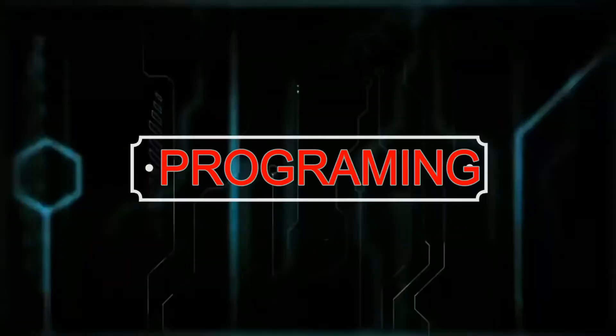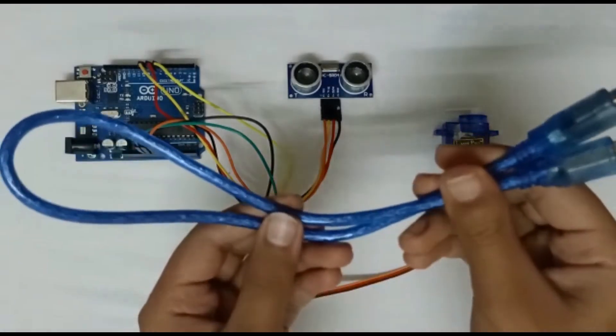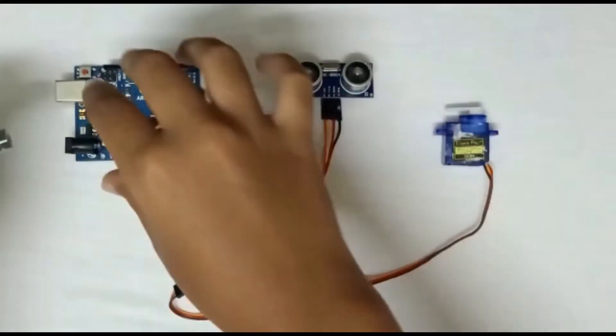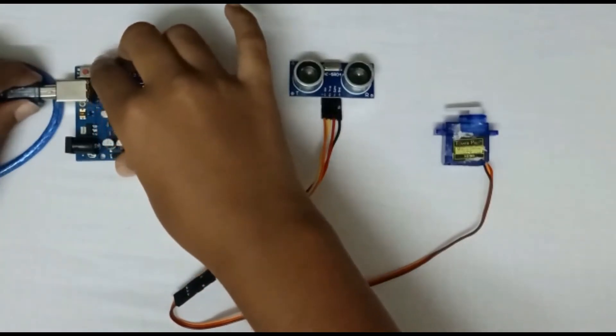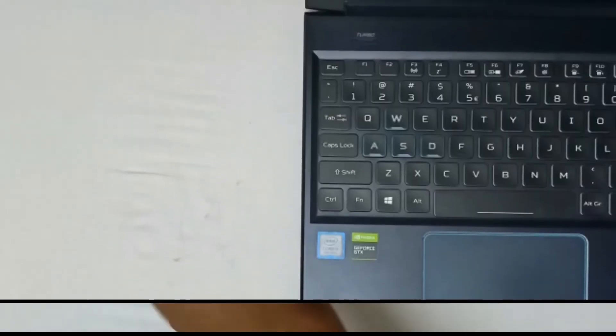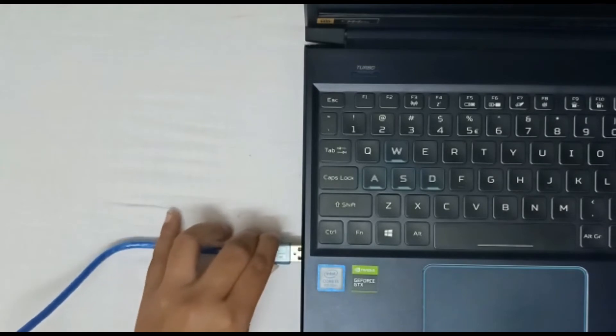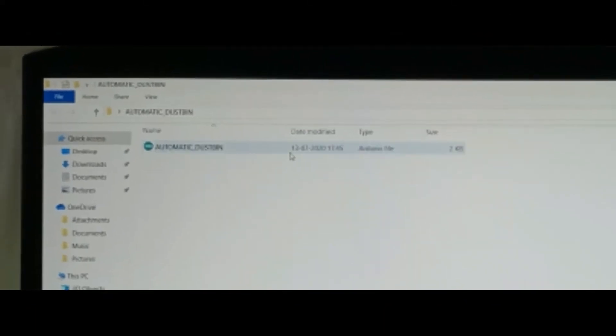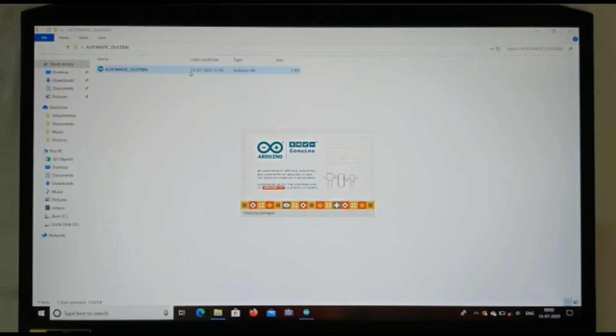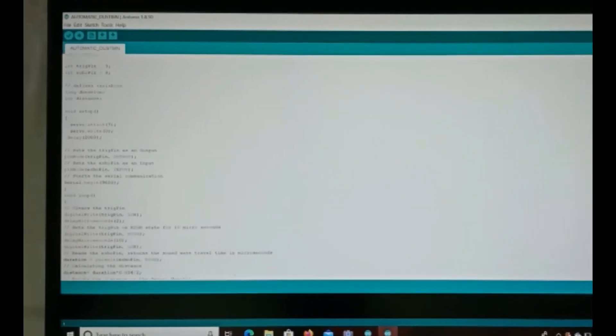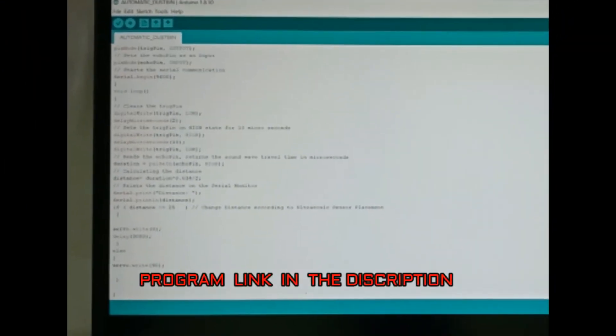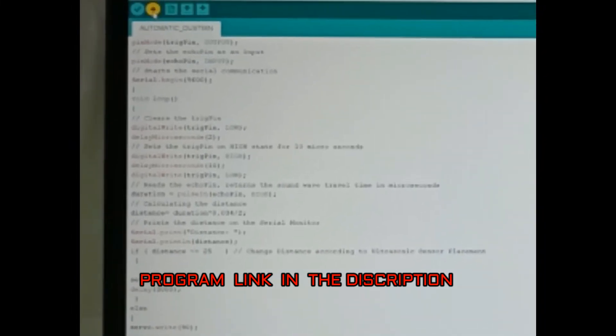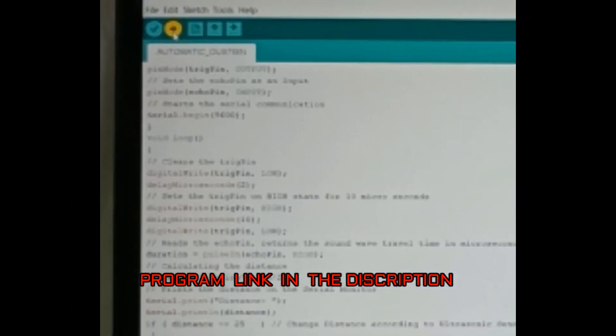Let's start the programming. Now take the USB cable and connect it to the Arduino and connect it to the laptop or if you have a desktop then connect it to the CPU. This is the programming which is to be uploaded in the Arduino. Now tap on the upload button and wait till the programming is uploaded.